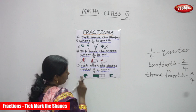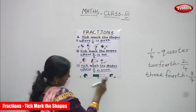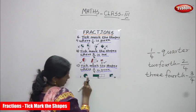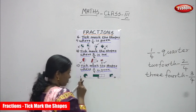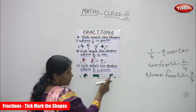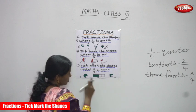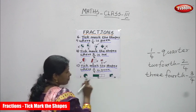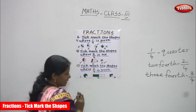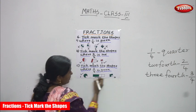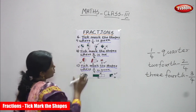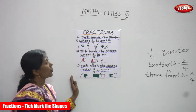So the first and third diagrams both have three parts shaded — that is three fourth, or three by four, in green color. That is why I put a tick mark for the first and third diagrams, and a wrong mark for the second diagram. I think you understand fractions very clearly.